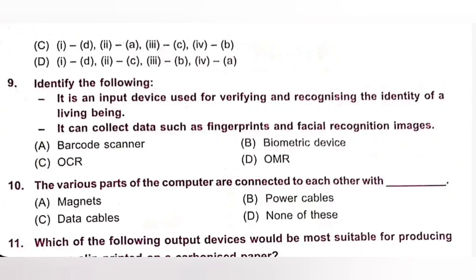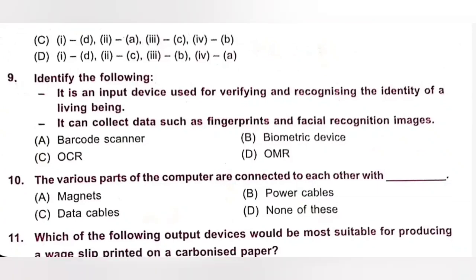Tenth. The various parts of the computer are connected to each other with dash. A. Magnets. B. Power cables. C. Data cables. D. None of these. So, the various parts of the computer are connected to each other with data cables. It allows different input and output devices to communicate with the computer. Option C is the correct answer.